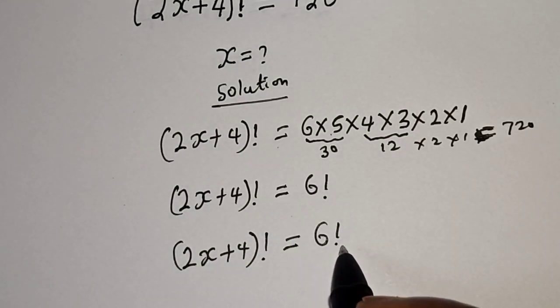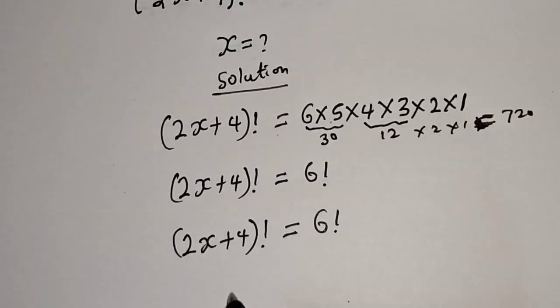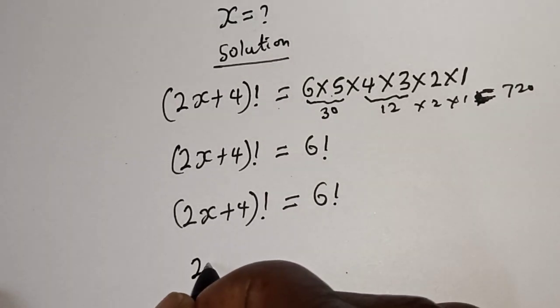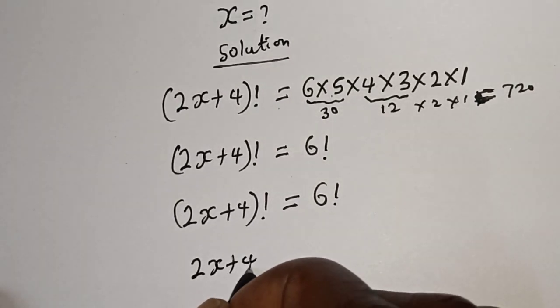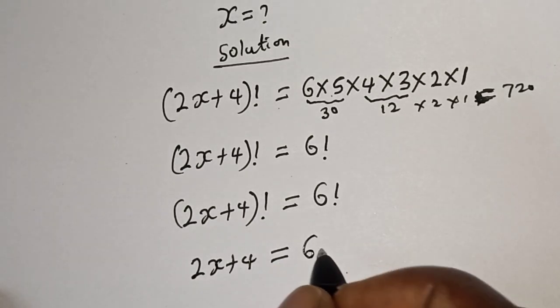720 is 6 factorial. We have 2x plus 4 factorial is equal to 6 factorial. Factorial here and factorial here, factorial will cancel the factorial. We have 2x plus 4 is equal to 6.